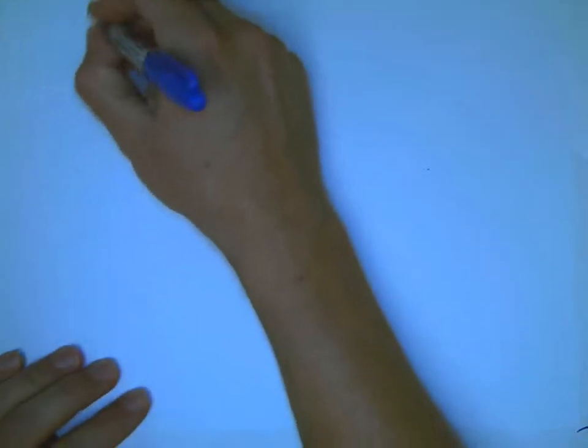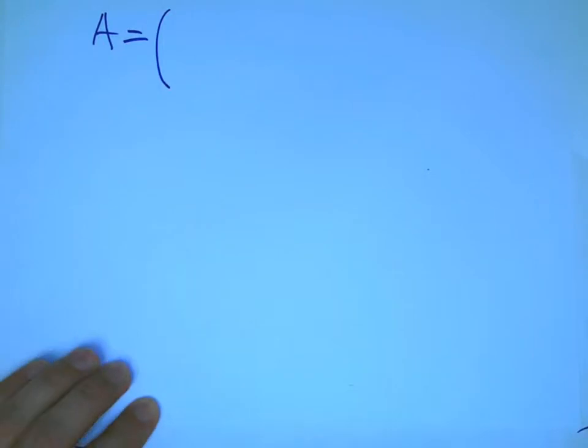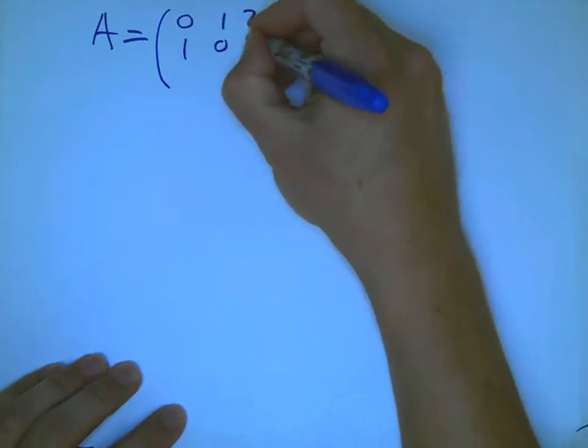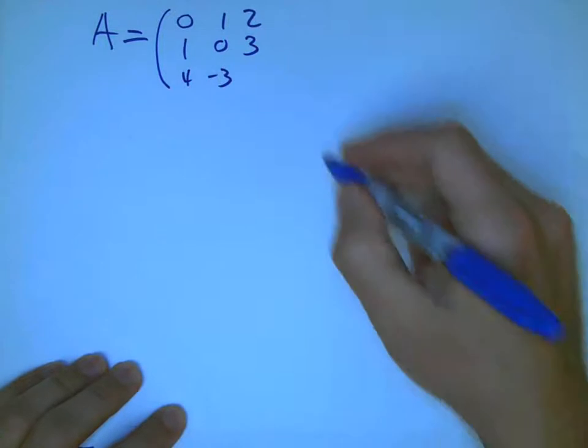And so A is going to be the matrix 0, 1, 2, 1, 0, 3, 4, minus 3, 8.